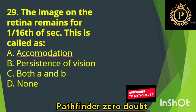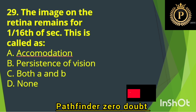The image on the retina remains for 1/16th of a second. This is called — Option B: Persistence of vision.